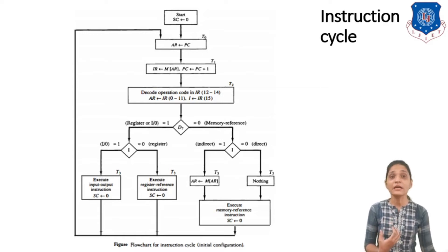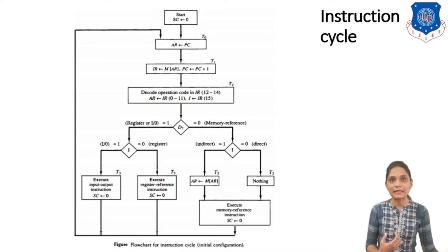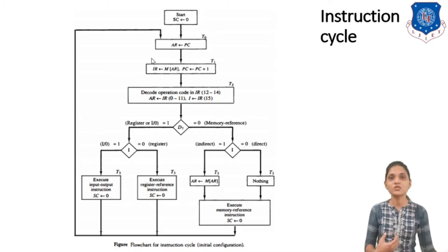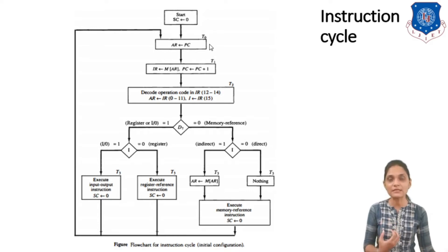How can we represent the instruction cycle? At the start, the sequence counter will be 0. As discussed in the last session, at the end the sequence counter is going to be 0. So first you fetch the instruction. The instruction is stored inside memory, and the address of that location is inside the program counter. So you first fetch the location given by the program counter.